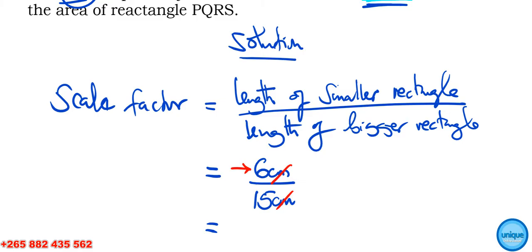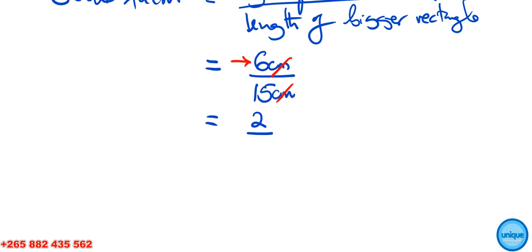If we simplify 6 and 15, we divide by 3, so we have 2 here and 5 there. That is our scale factor: 2/5.